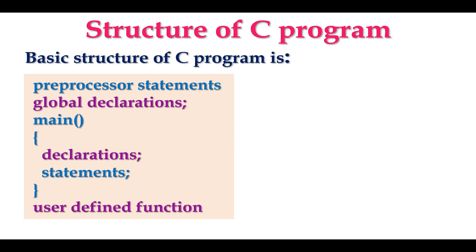Every C program starts with the preprocessor statements, and if needed, variables are declared globally. Every C program has the main function, followed by an opening brace which indicates the start of the main function. Whenever you want to perform any operation, you need to declare the variables — that is the declaration part. The statements indicate the actual operations, and the main function is ended by the closing brace.